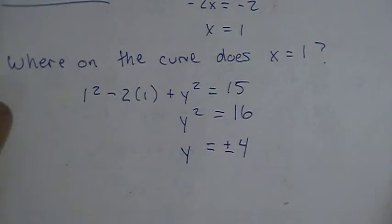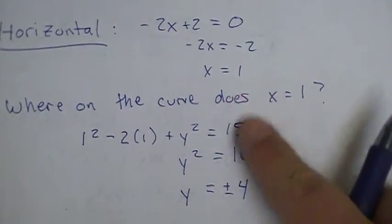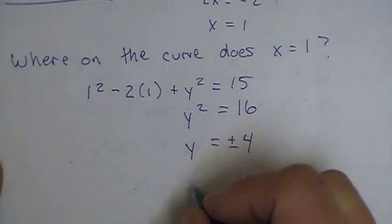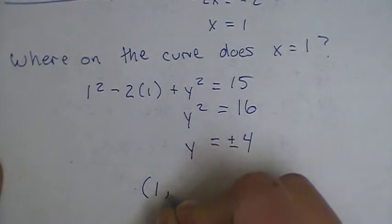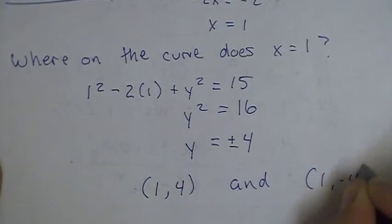So this curve has two places where it has horizontal tangents, where x is 1 and y is 4, and where x is 1 and y is -4. So we have a horizontal tangent at (1, 4) and a horizontal tangent at (1, -4).